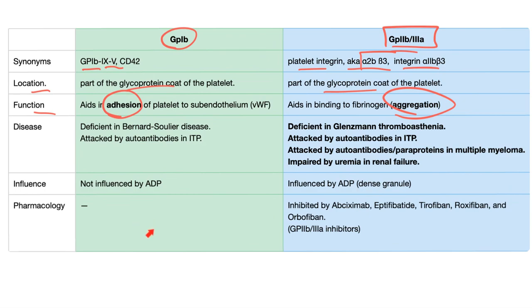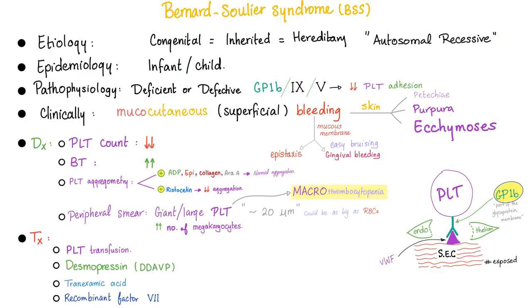There are no drugs that inhibit GP1B, but there are many drugs that inhibit GP2B3A. They are called the GP2B3A inhibitors, and they include abciximab, tirofiban, eptifibatide, roxifiban, and rofiban.